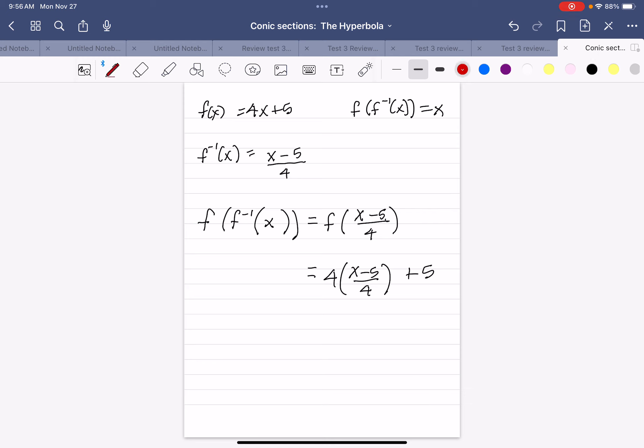Now because this is a times here, I can reduce those two fours. And that gives me (x - 5) + 5, which gives me x.